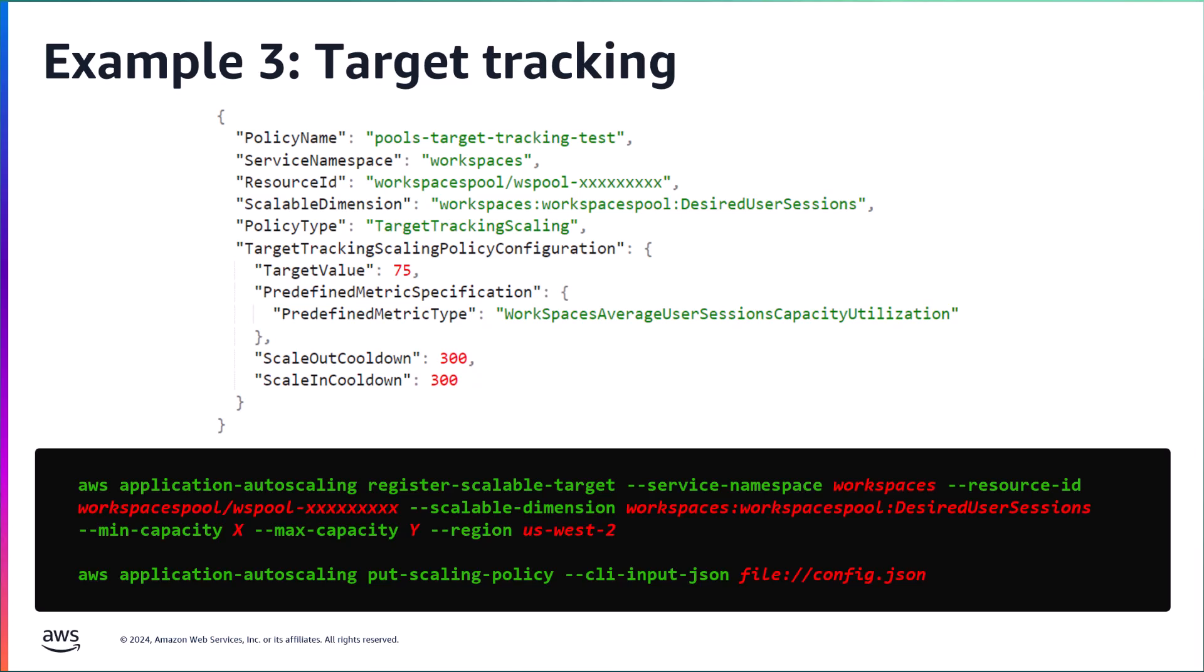The scalable dimension should be workspaces colon workspaces pool colon desired user sessions. You then define the target value for the policy to track and set the predefined metric type to workspaces average user session capacity utilization, all one word.